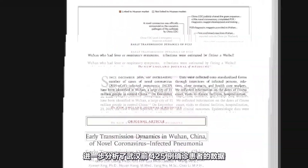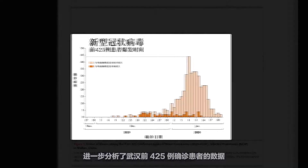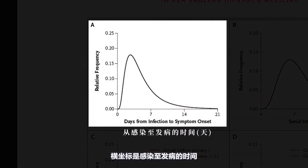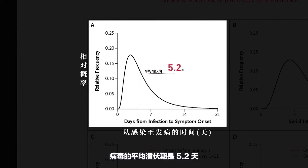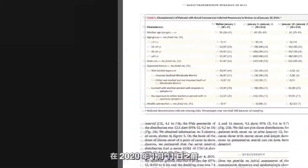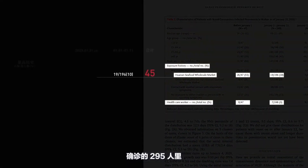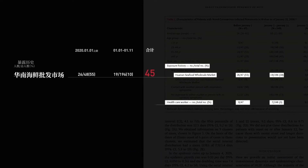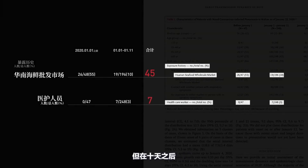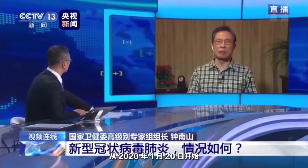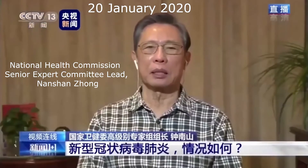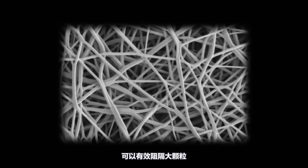This paper, published on January 30th, further analyzed data from the earliest 425 diagnosed patients in Wuhan. It is certain that we have human-to-human transmission, so wearing a mask is certainly a good idea. The multi-layered structure of a mask can effectively block large particles, and nanometer-scale particles adhere to the fibers by static electricity. If we plot particle diameter on the x-axis and filtration efficiency on the y-axis, the filtration effects of these masks exhibit as U-shaped curves.